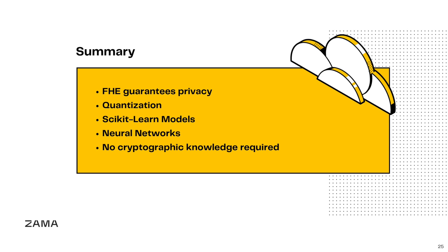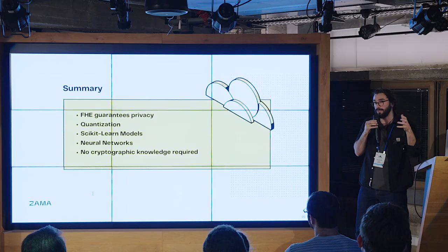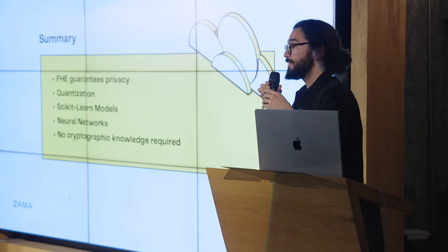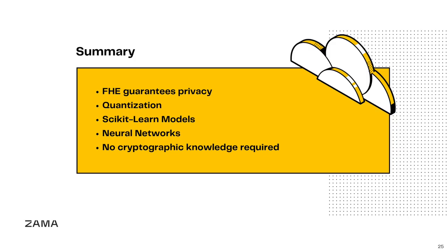In summary, we use FHE to guarantee privacy at inference time — that's the core of the technology. It comes with the constraint of integral-only computations, but there's a whole existing field of quantization to handle that. We package this so data scientists don't have to worry about those considerations. You could probably use the library even if you haven't done machine learning before — it should be pretty easy.